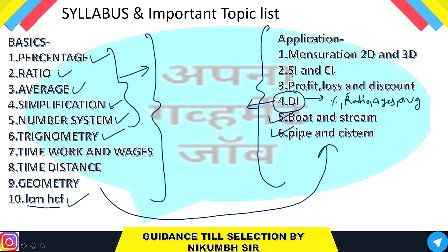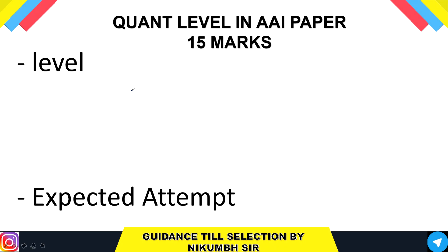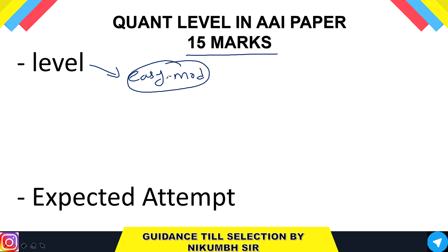This is the important syllabus for your quantitative aptitude for the AAI recruitment — note it down or take a screenshot. The quantitative aptitude section is for 15 marks. The expected difficulty level for AAI 2020 will be easy to moderate, so don't worry about that.